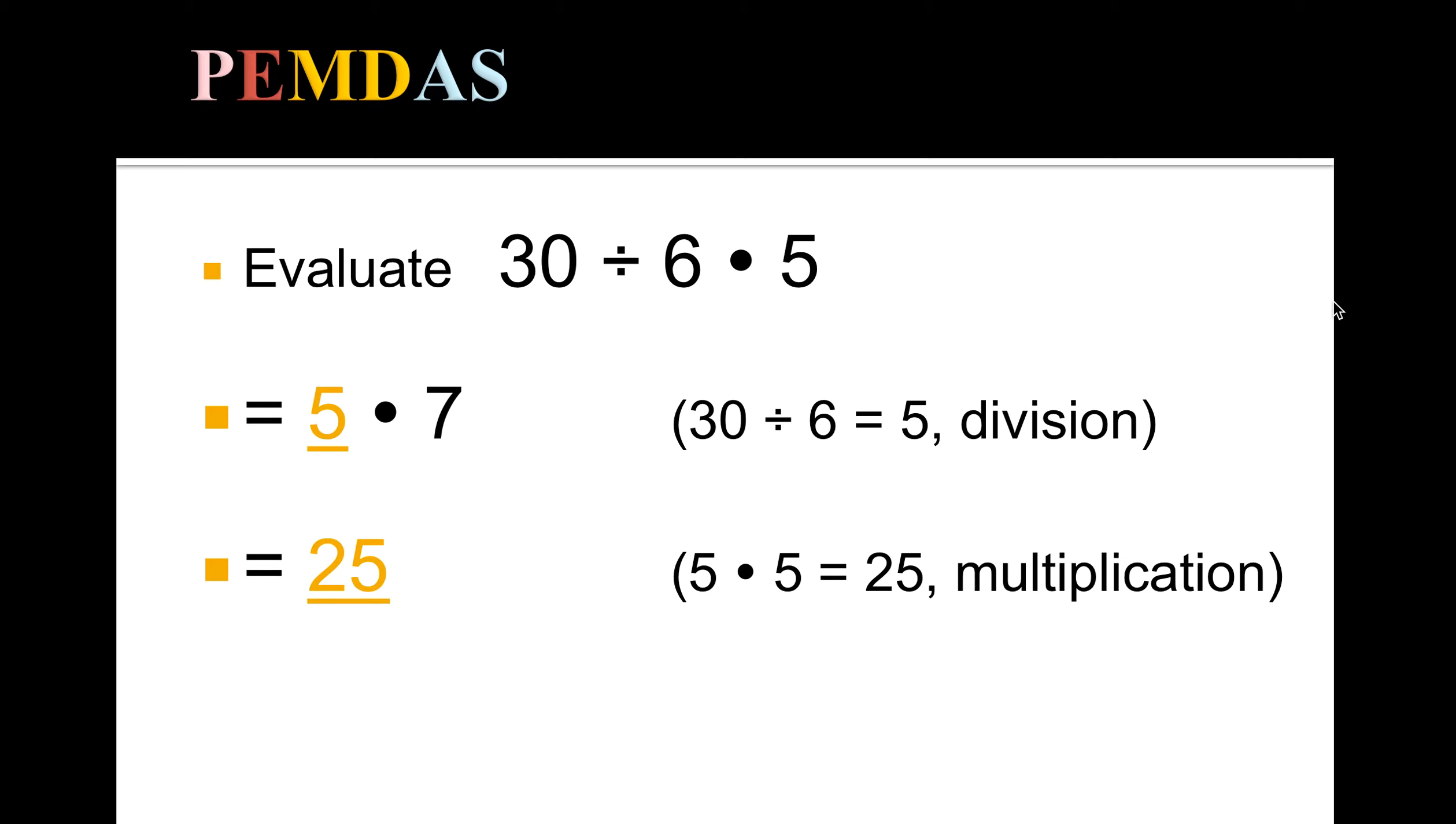Next up, a little more complicated example—this has all the different operations. First we're going to do those parentheses: 28 minus 12, that's 16. We rewrite it removing the parentheses. Next we're going to do this exponent, 5 squared at the end, which means 5 times 5.